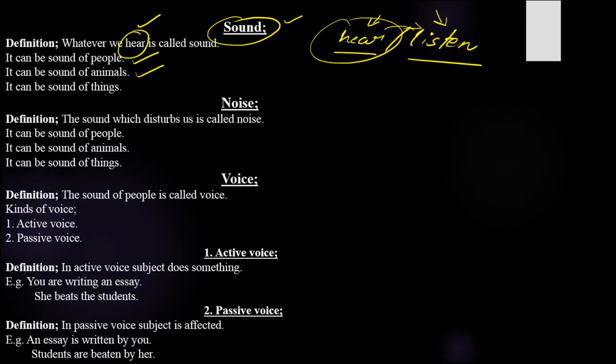That can be sound which passes through your ear but you are not understanding it. It can also be the sound of things — like beating drums or a car making noise. Whatever things produce any sound can be called the sound of things. In the same way, noise is actually the opposite of sound in a sense.